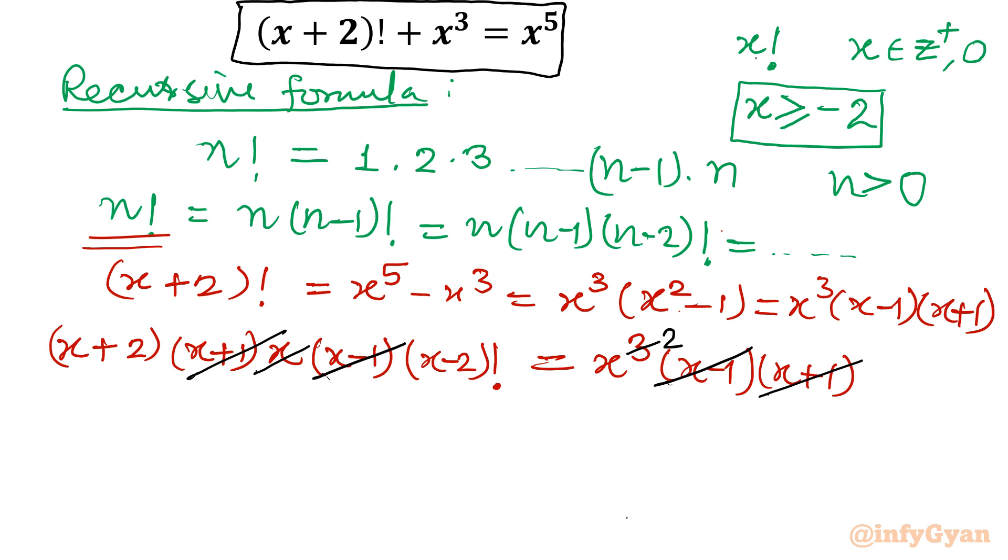So let's check quickly. x equal to 0: If I am putting x equal to 0, see what will happen? 2 factorial plus 0 equal to 0. So yes, it is not satisfying, so we can divide. x equal to 1: 3 factorial plus 1. 1 cubed is 1, 1 to the power 5 is again 1. 3 factorial is 6, 6 plus 1. LHS is 7, RHS is 1. So again, it is not satisfying, so we can cancel or divide.